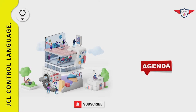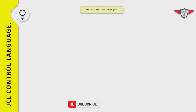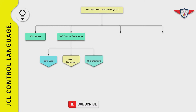We start today's session with an introduction to IBM mainframe, then we will try to understand the term JCL and why it is important from a mainframe perspective. Then we will deep dive into different stages of JCL followed by job control statements — including job card, execute statement, and DD statements.